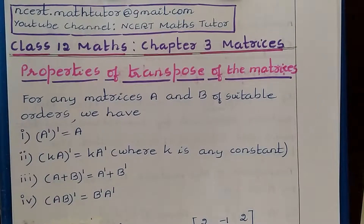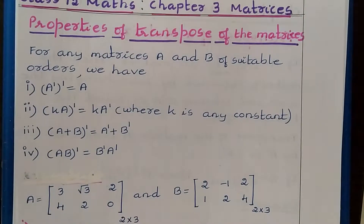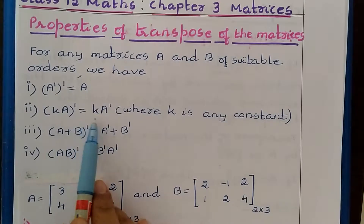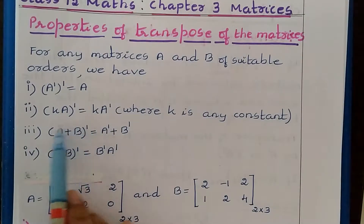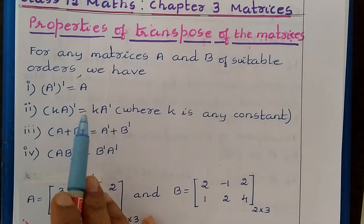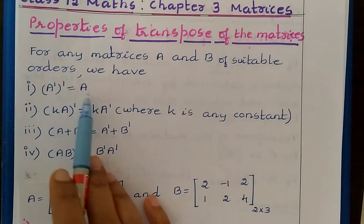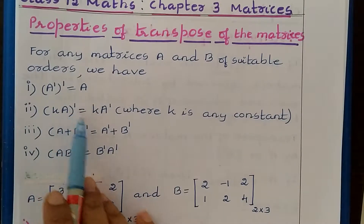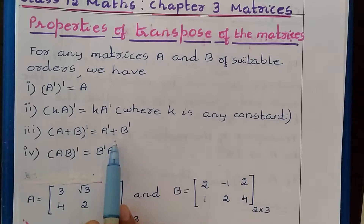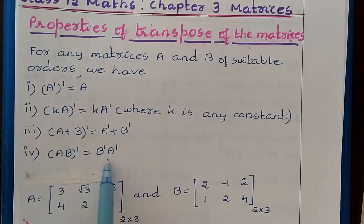With respect to transpose of a matrix, we have four properties. First, A transpose transpose is equal to A. Second, (kA) transpose is equal to k times A transpose. Third, (A+B) transpose is equal to A transpose plus B transpose. Fourth, (AB) transpose is equal to B transpose times A transpose.